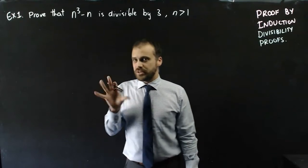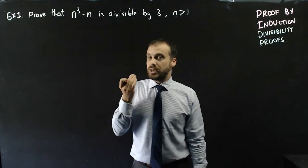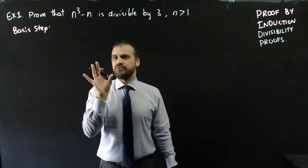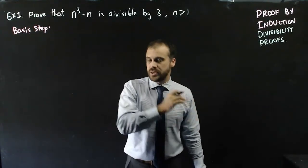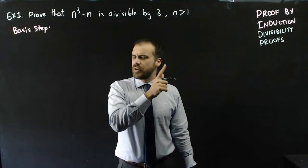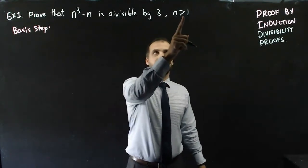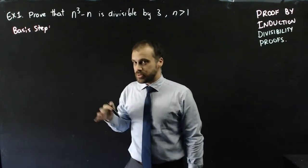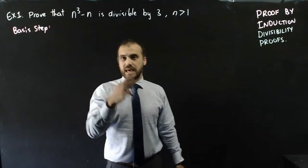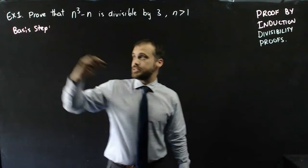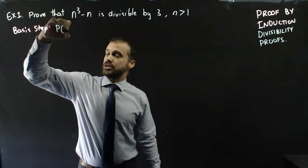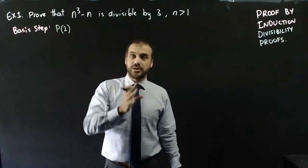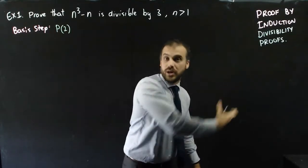We follow the same thing we did for partial sums. First, we do a basis step, which is just showing that it works for the first value in the series. The first value is n greater than 1, so in this instance the basis step isn't n equals 1 — the basis step is where n equals 2, because this only works for things greater than 1.